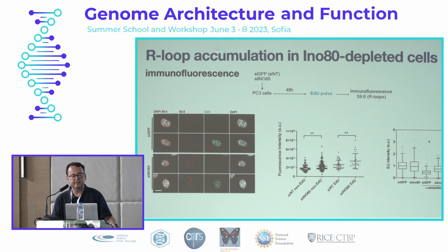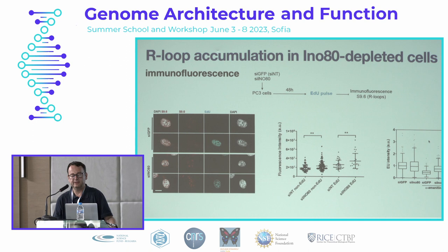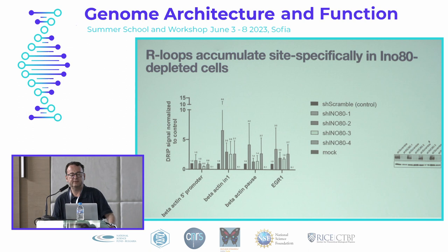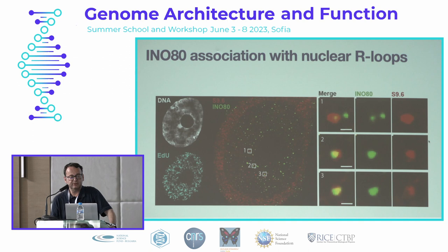Next we checked the amount of R-loops by immunofluorescence with the S9.6 antibody, and observed that independent of whether cells were in or outside of S-phase, there was an increase in S9.6 signal in cells deficient for INO80. We then checked whether the increase of R-loops is site-specific. By DNA-RNA immunoprecipitation followed by PCR, we found that sequences known to be prone to R-loop formation indeed generate more R-loops in cells silenced for INO80, while other sequences did not — so this phenomenon is site-specific.